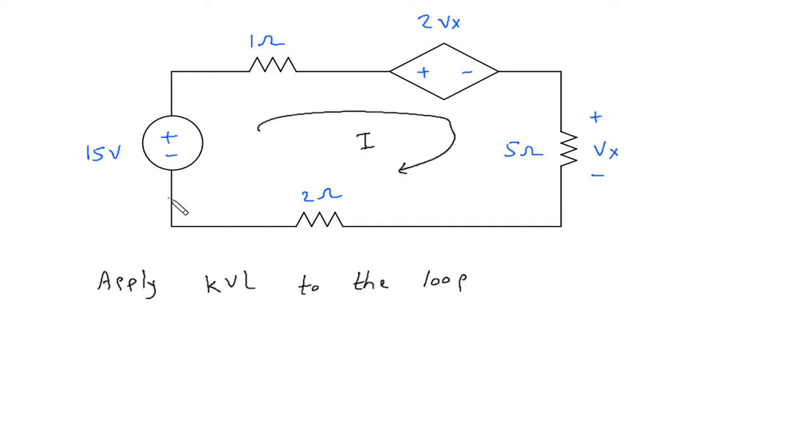Let us say we will start from this point, so minus 15 then 1 into i plus 1 into i, then plus 2Vx plus 2Vx, then plus Vx plus Vx, then plus 2 ohm into i, plus 2 ohm, this resistance into current is equal to 0.